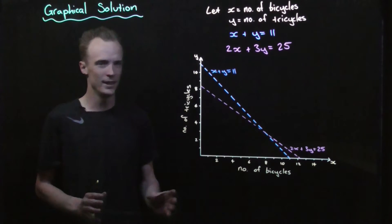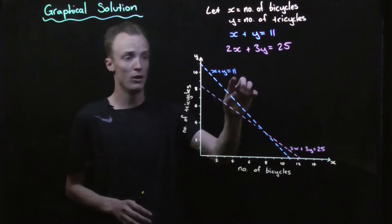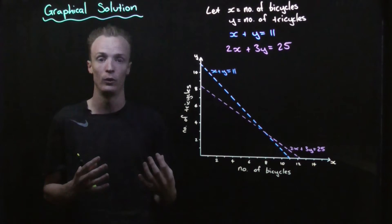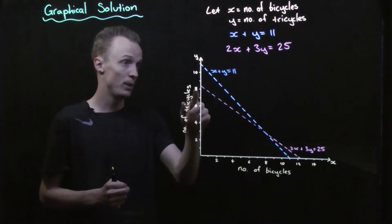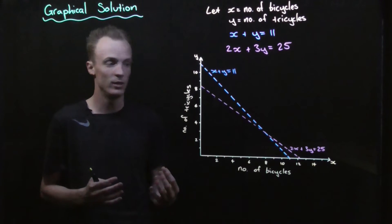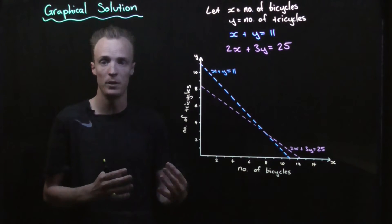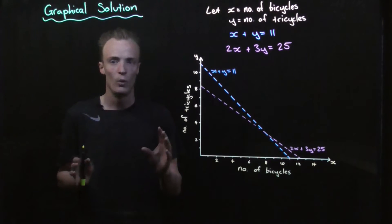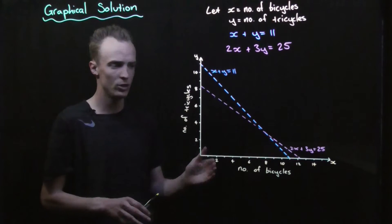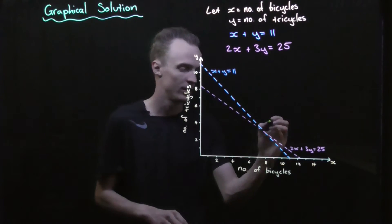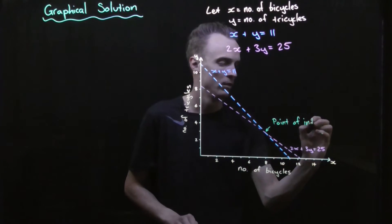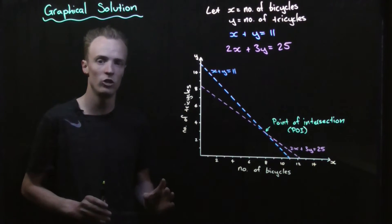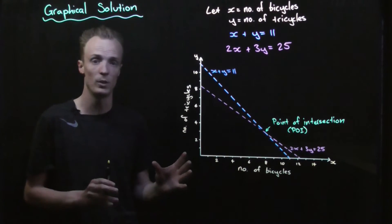Now I've graphed these — let's explain what this actually shows. This blue line represents all the combinations of bicycles and tricycles that exist for our total cycle count. This pink line represents all the combinations of wheels that we could have with our bicycles and tricycles. When we graph it like this, we can take special note of where these two lines actually intersect.